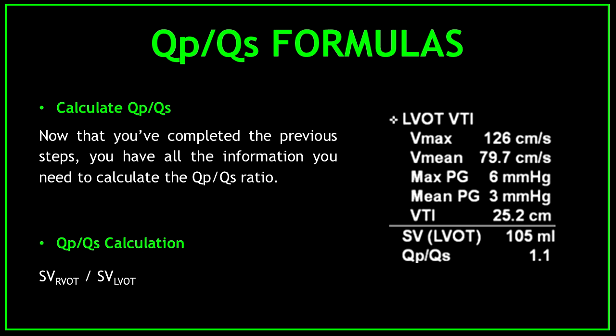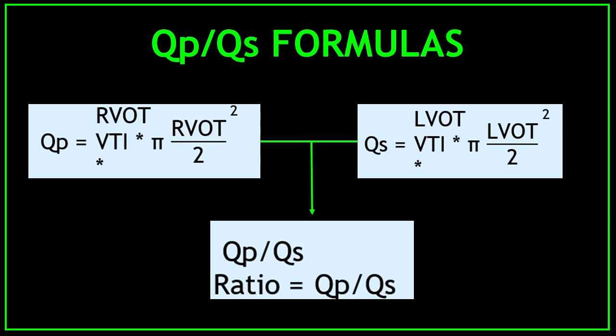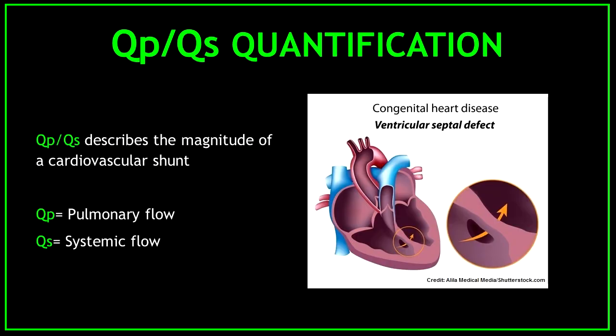Now that you have completed the previous steps, you have all the information you need to calculate the QPQS ratio. Here you can see the QPQS ratio formula in detail. I already have on my channel a video on how to obtain the stroke volumes — I will leave the link in the description. QPQS describes the magnitude of a cardiovascular shunt. Remember that QP refers to the pulmonary flow and QS refers to the systemic flow.